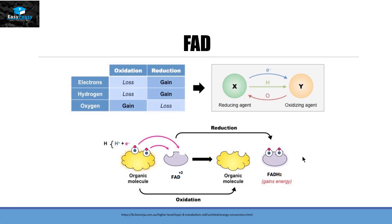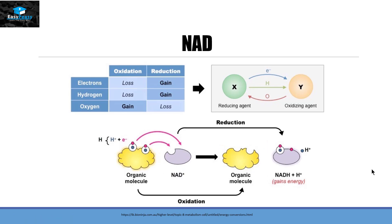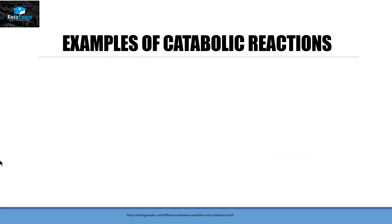For the NAD coenzyme, the organic molecule again loses its hydrogen and electrons. NAD⁺ takes only one hydrogen but takes both electrons from the molecule, reducing itself into NADH. One hydrogen is released in the form of H⁺. So NADH is the reduced form of NAD⁺. Through these oxidations and reductions, coenzymes couple the reactions of catabolism with those of anabolism.